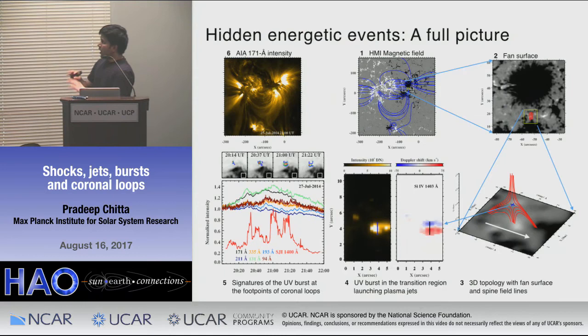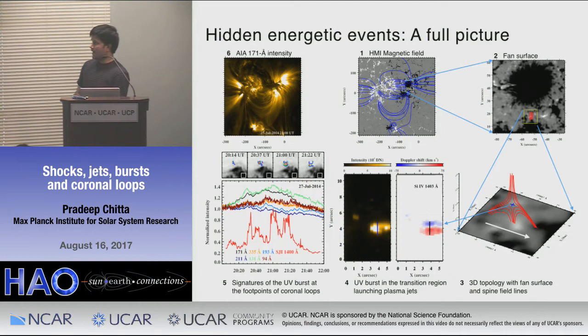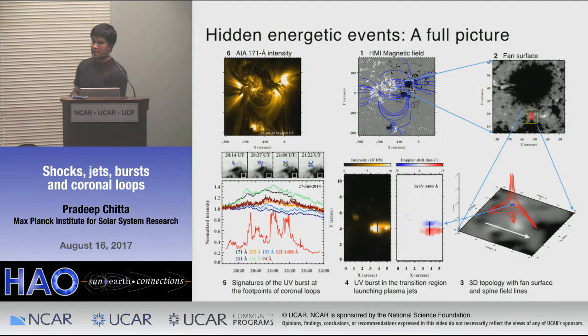To outline this UV burst and the magnetic reconnection signature, I show a collage of all results together: starting from the magnetic field in the photosphere, there is a fan surface at lower heights, and the 3D structure shows a null point at some height in the atmosphere. The translation motions of the parasitic polarity underlying this fan surface probably cause a UV burst showing signatures of jets at significant speeds comparable to sound speeds. These jets probably triggered a response in the coronal loops that we see — this is the complete picture.